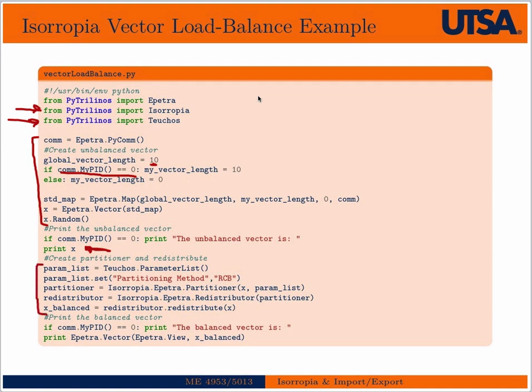This is where the magic happens — the load balancing part. It's quite concise, not much more code than when we did it manually with MPI. Isoropia won't guarantee perfect load balancing, but you can set a criterion to adjust how accurate it has to be. If you want it as perfectly balanced as possible, you can set it, but there's some computational cost associated with that — so there are heuristics that give the best load balancing at reasonable cost.